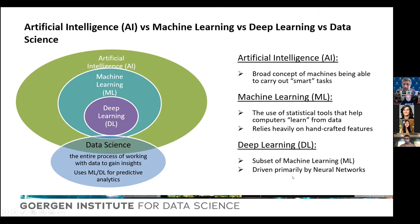Deep learning has created a revolution in recent times, especially with self-driving cars and automated gaming. Combining all of this is where data science plays a role — bringing all these technologies together. Broadly, data science is this whole end-to-end process of working with data, implementing machine learning and deep learning, and deriving insights. This Venn diagram on the left captures how these different terms relate to each other.